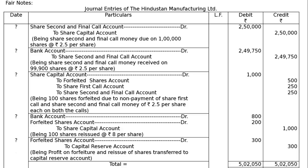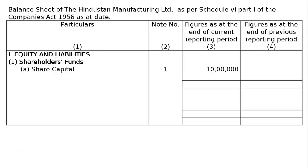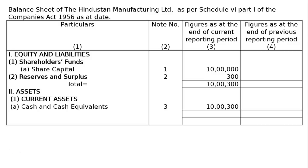Total of journal entries: Rs.5,02,050. Now the balance sheet of Hindustan Manufacturing Limited as per Schedule 6, Part 1 of the Companies Act 1956. Part 1 - Equity and Liabilities: Shareholders' Funds - Share Capital Note 1: Rs.10 lakh (1 lakh shares of Rs.10). Reserves and Surplus Note 2: Rs.300 (capital reserve). Total: Rs.10,00,300. Part 2 - Assets: Current Assets - Cash and Cash Equivalents Note 3: Rs.10,00,300. Total: Rs.10,00,300.